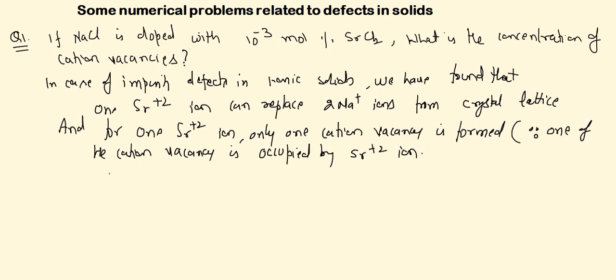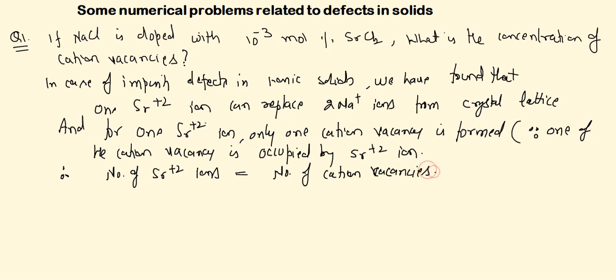One thing is clear: the number of Sr²⁺ ions is equal to the number of cation vacancies. Therefore, we just need to find out how many Sr²⁺ ions are present in 10⁻³ mol percent SrCl₂. However many Sr²⁺ ions are present, that many cation vacancies will be formed.